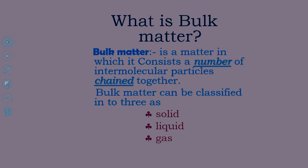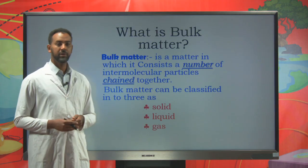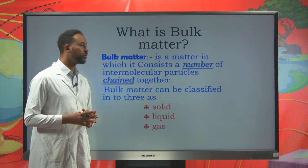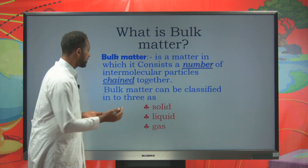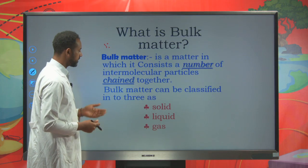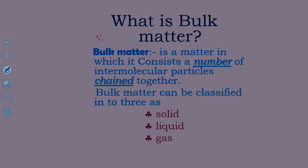First, let's define what bulk matter is. Bulk matter is matter which consists of a number of particles that have intermolecular relationships. In the case of bulk matter, those particles must be interconnected — they have a chained structure. Such bodies are known as bulk matter. We mainly classify bulk matter into three: solid, liquid, and gas.